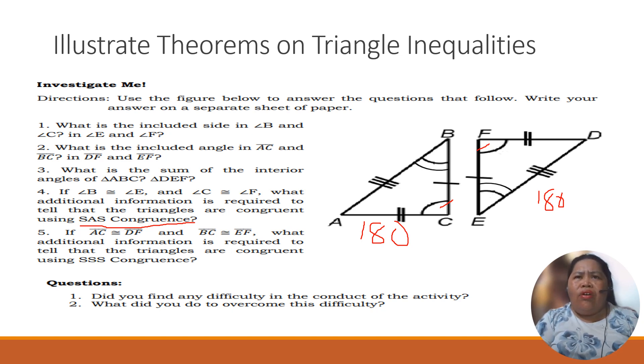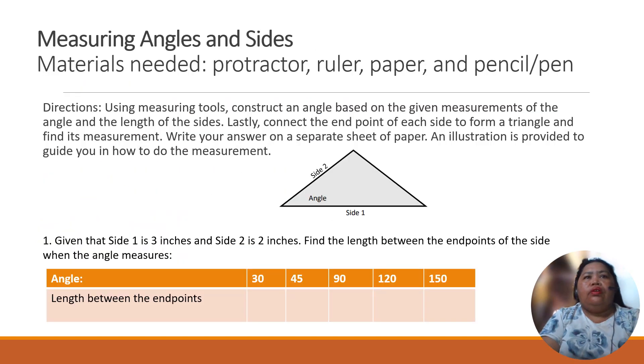If AC is congruent to DF, or BC is congruent to EF, what additional information is required to tell that the triangles are congruent using SSS? Of course, we need three sides. So we need another one. For example, we have AB is congruent to DE.